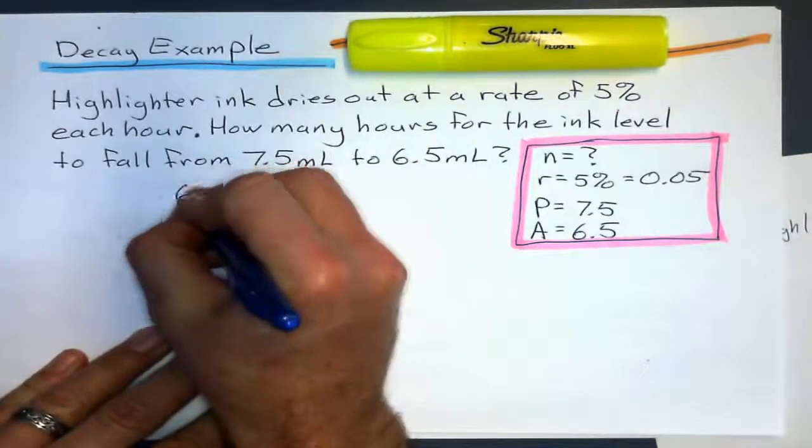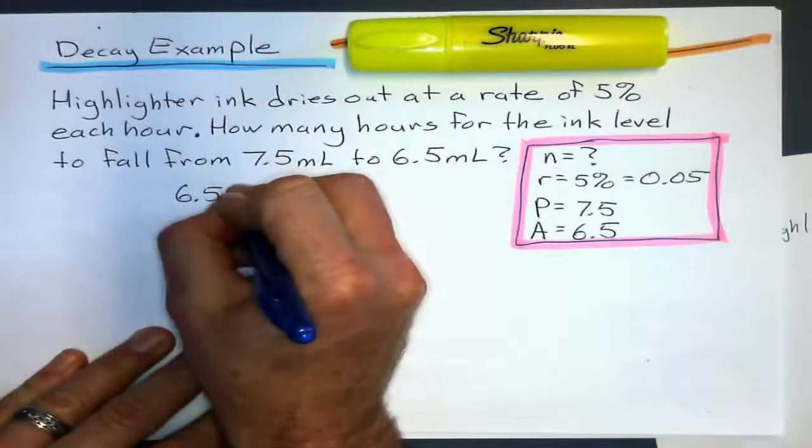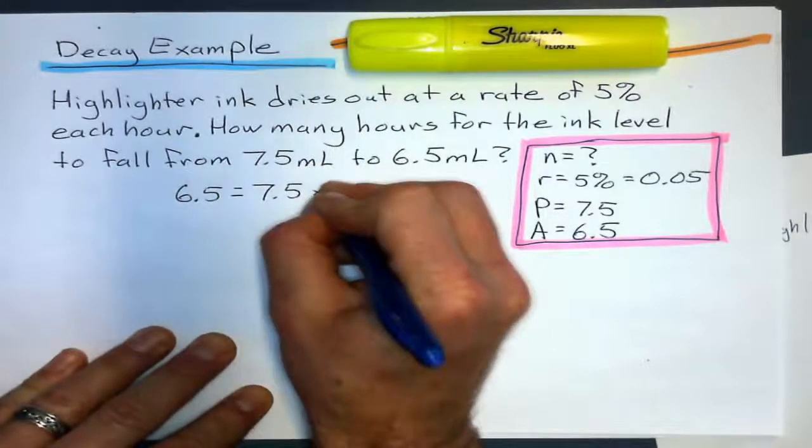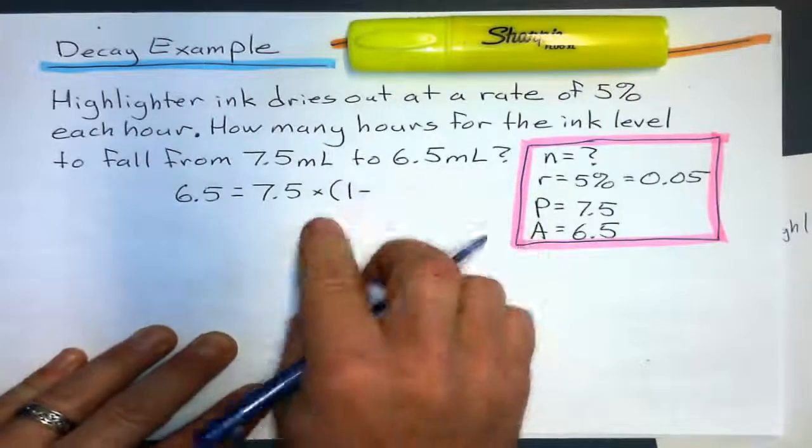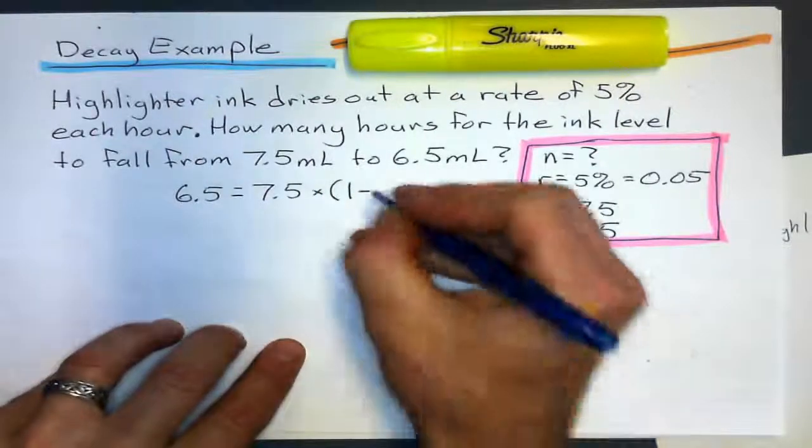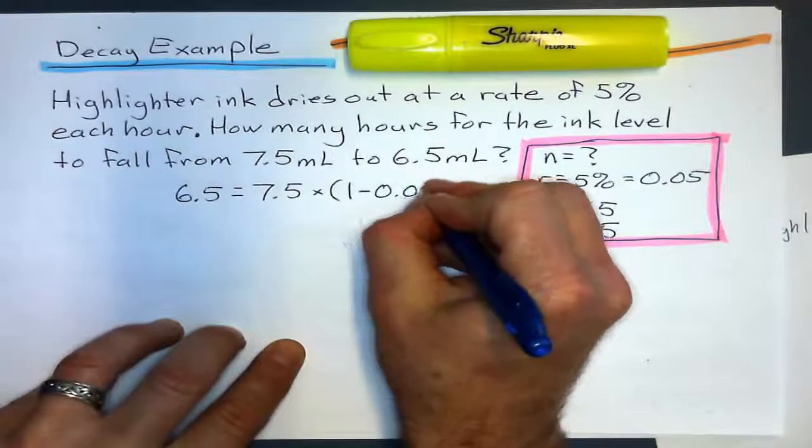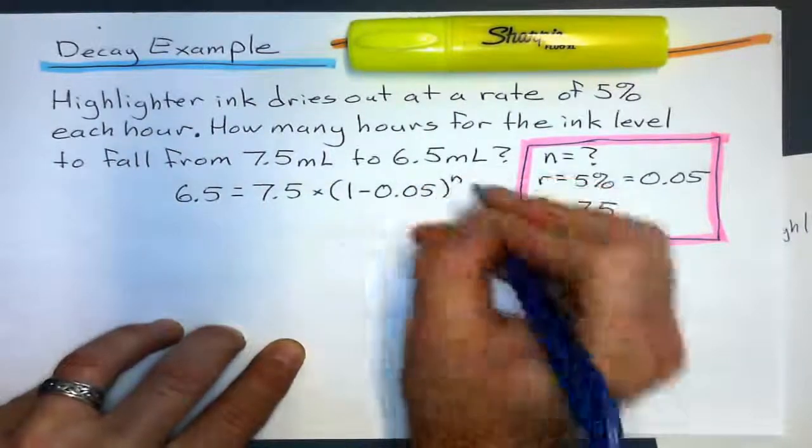So, the new amount is 6.5 equals 7.5 times 1 minus. I'll put the 1 this time. I didn't do that last time. I did it all in one step.